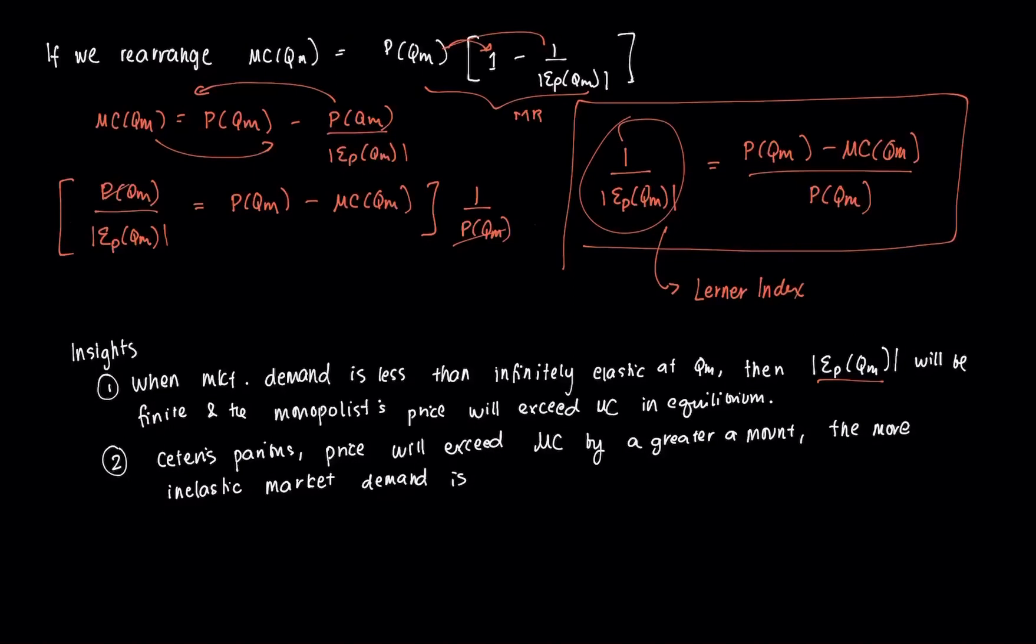That's for the case of a monopolist. Now in a perfectly competitive market, price would equal marginal cost in the equilibrium. But in a monopolist, it's marginal revenue equal to marginal cost.